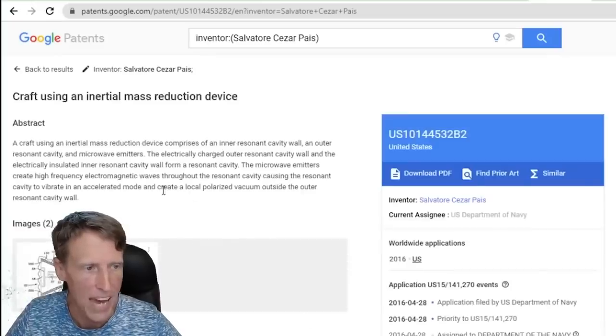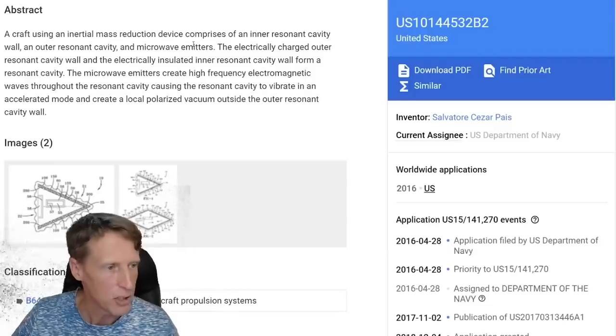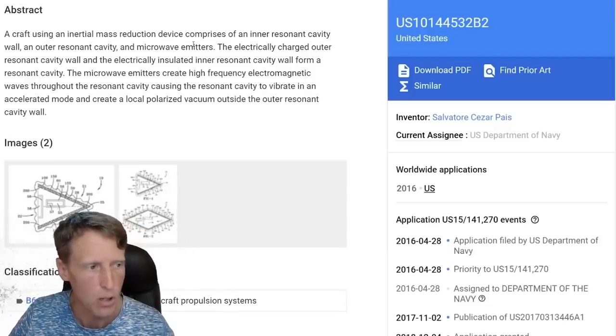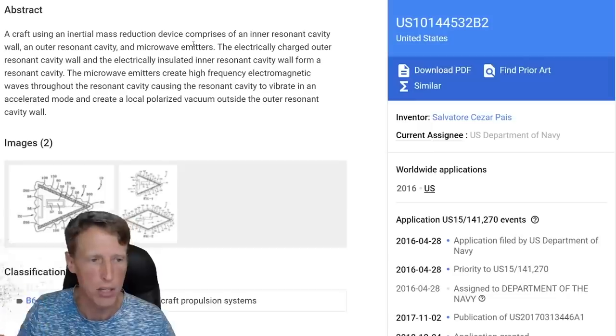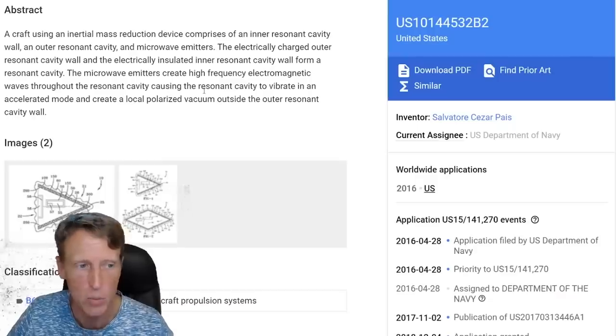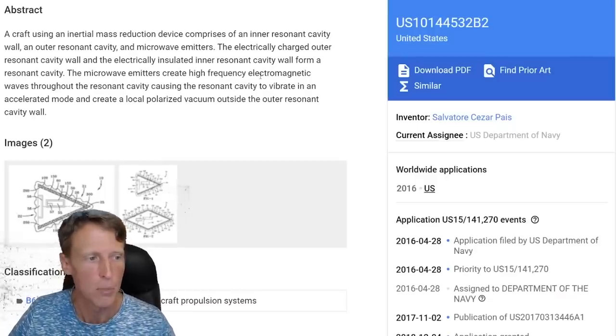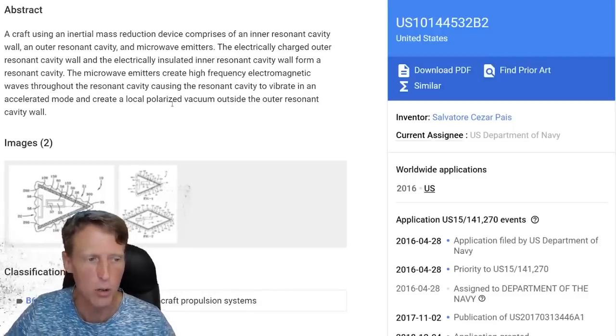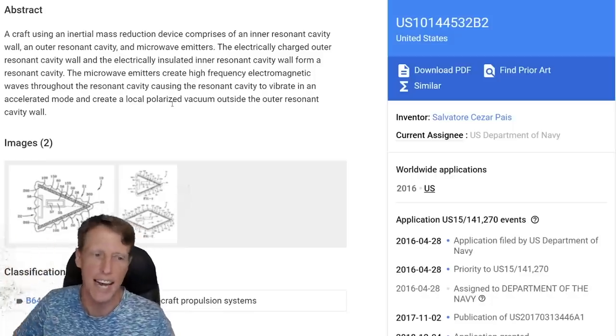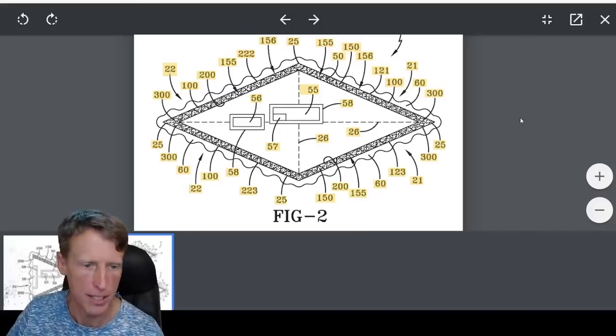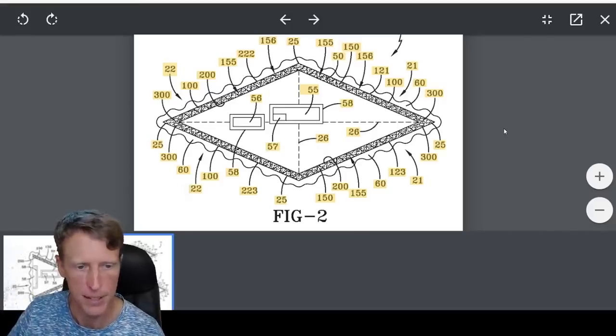The first one is craft using an inertial mass reduction device. A craft using an inertial mass reduction device comprises of an inner resonant cavity wall, an outer resonant cavity wall, and microwave emitters. The electrically charged outer resonant cavity wall and the electrically insulated inner resonant cavity wall form a resonant cavity. The microwave emitters create high frequency electromagnetic waves throughout the resonant cavity, causing the resonant cavity to vibrate in accelerated mode and create a local polarized vacuum outside the outer resonant cavity wall.